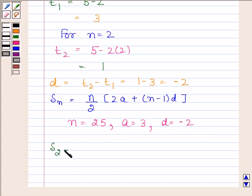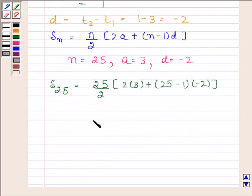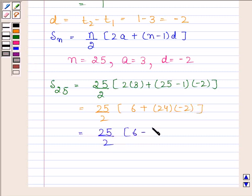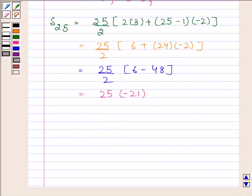So s25 equals 25 divided by 2 into 2 into 3 plus 25 minus 1 into minus 2. This is equal to 25 divided by 2 into 6 minus 48. And this is equal to minus 525.